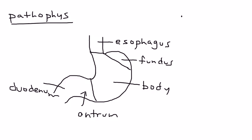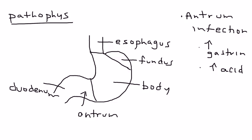If you have H. pylori infection of the antrum, it causes an increase in gastrin production. Gastrin is a hormone that increases the acid, and that can cause ulcers, but in particular duodenum ulcers.